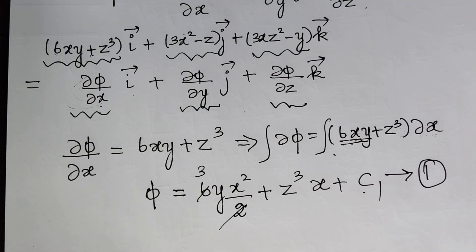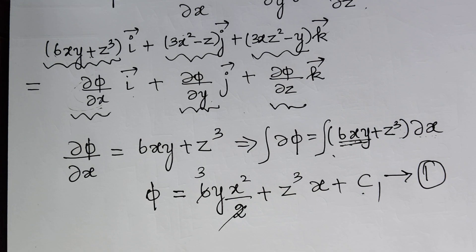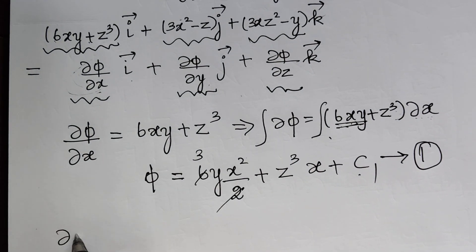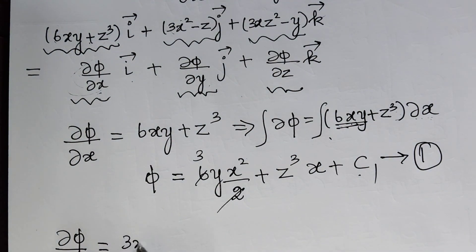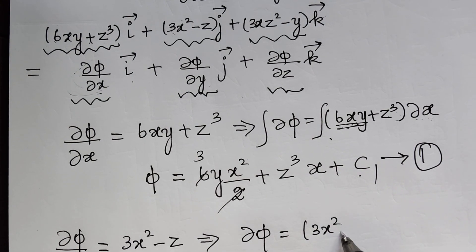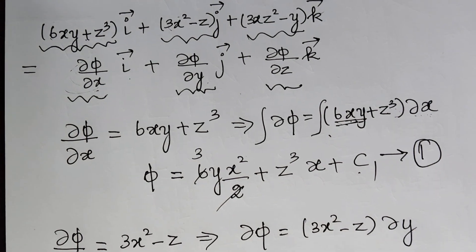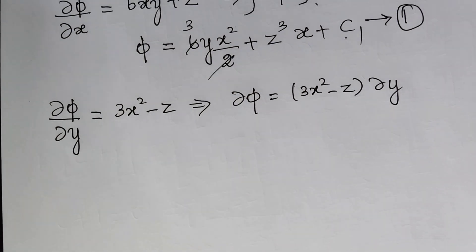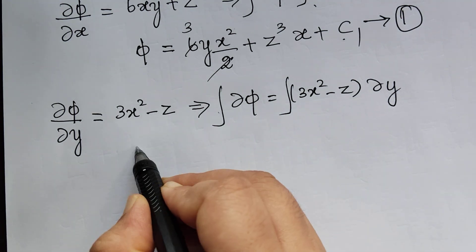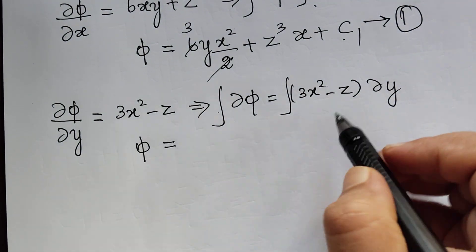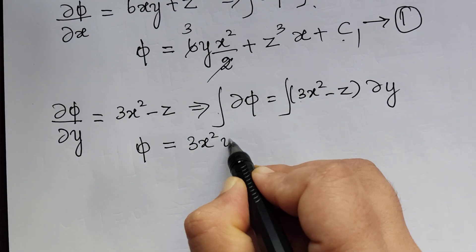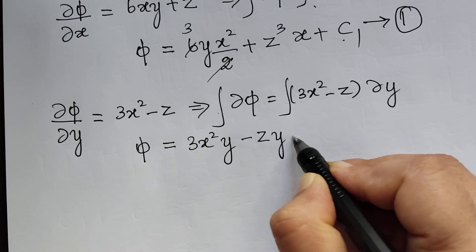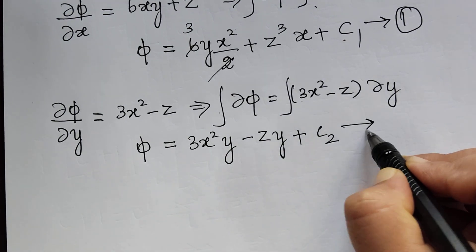Now let us equate the j-th component. ∂φ/∂y equals 3x² − z. From this, dφ = (3x² − z) dy. Integrating on both sides: φ = 3x²y − zy + c₂. Let us mark this as equation 2.